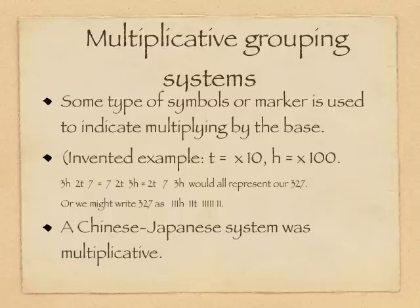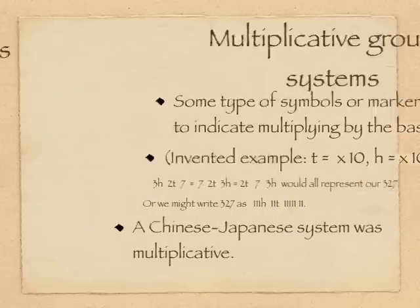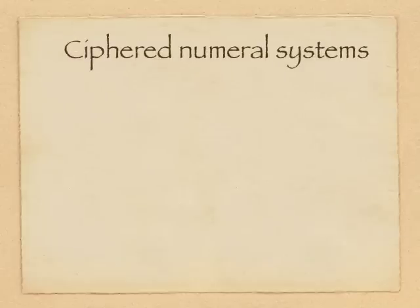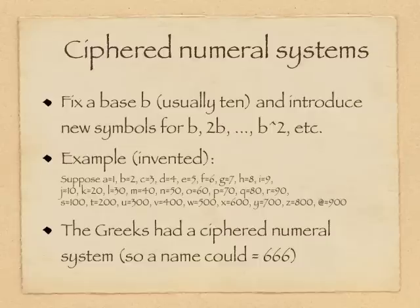A Chinese-Japanese system was multiplicative. There are cipher numeral systems.